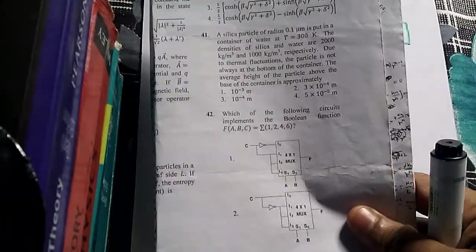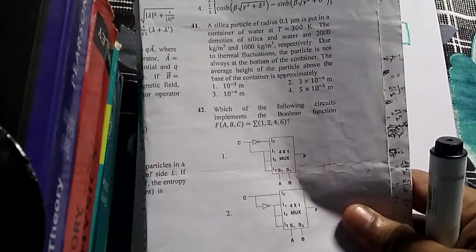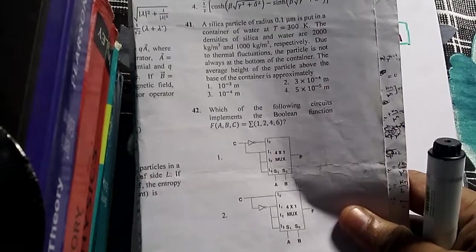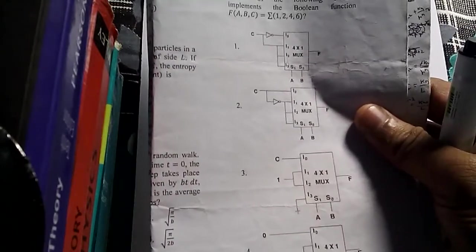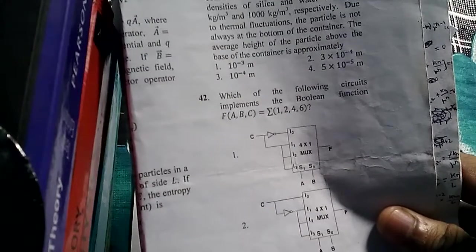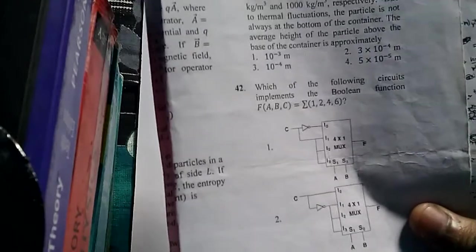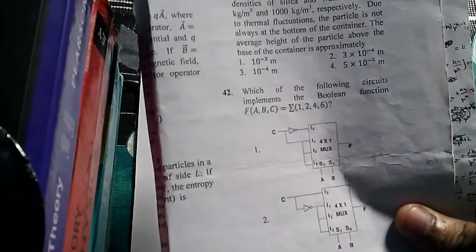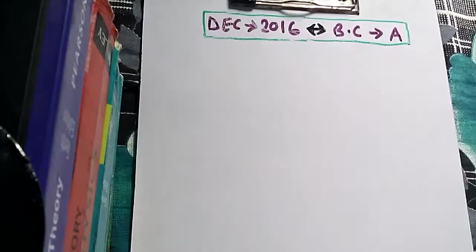This question asks: which of the following circuits implements the boolean function f(ABC) = Σ(1, 2, 4, 6)? As you can see, we have four options. We need to check these four options one by one and see which one produces the required function f(ABC) = Σ(1, 2, 4, 6).